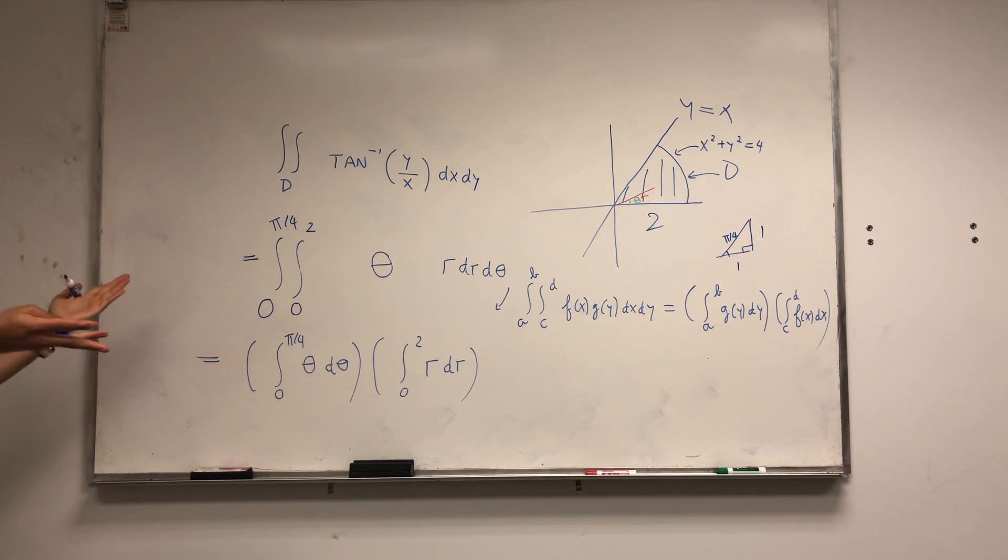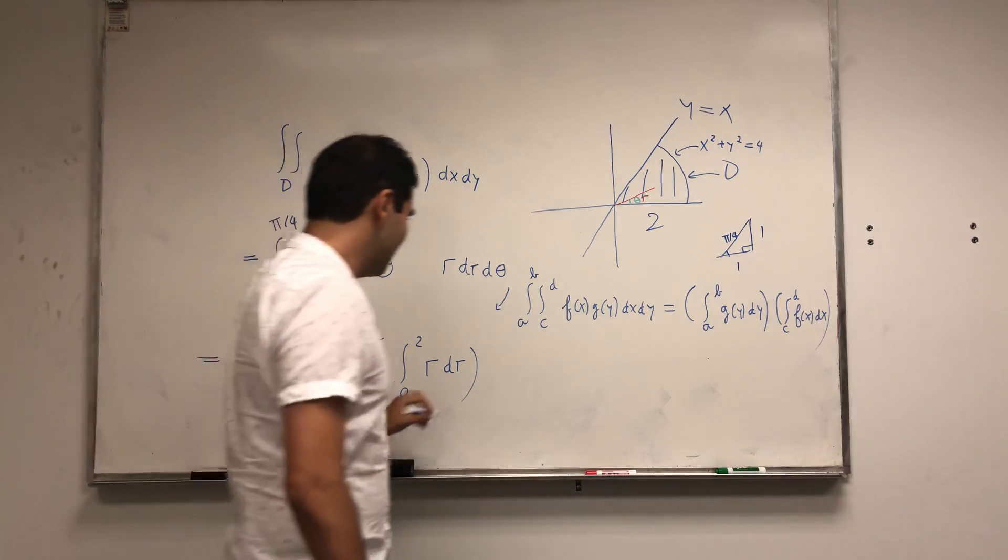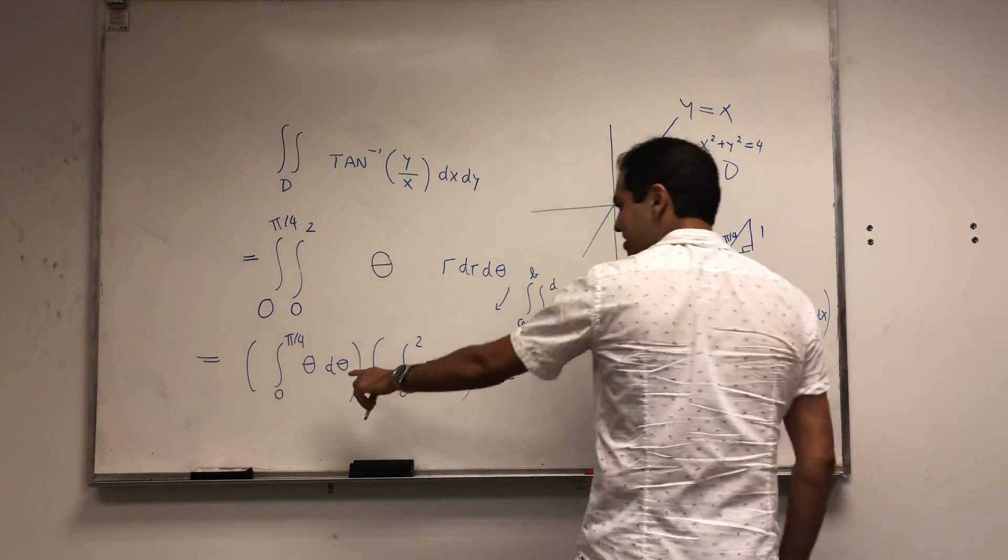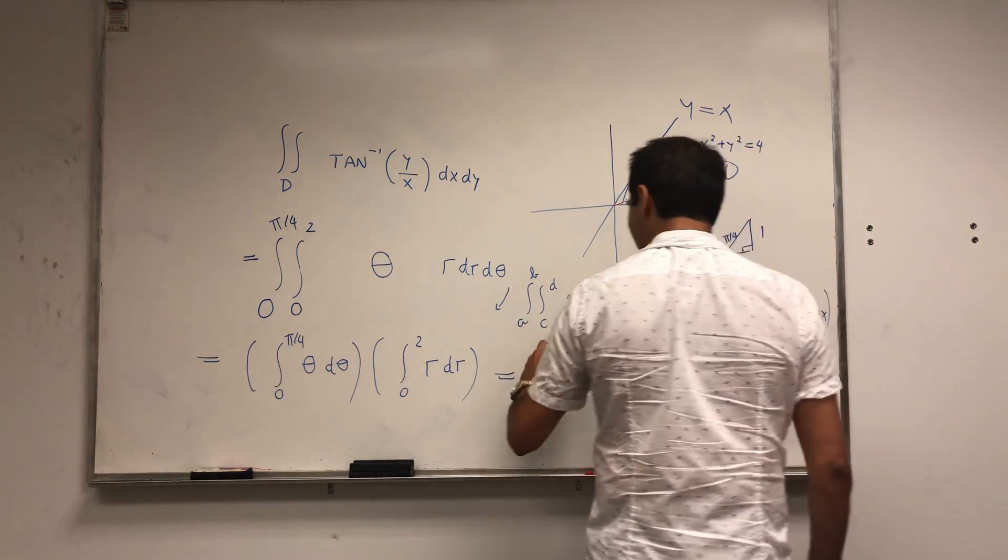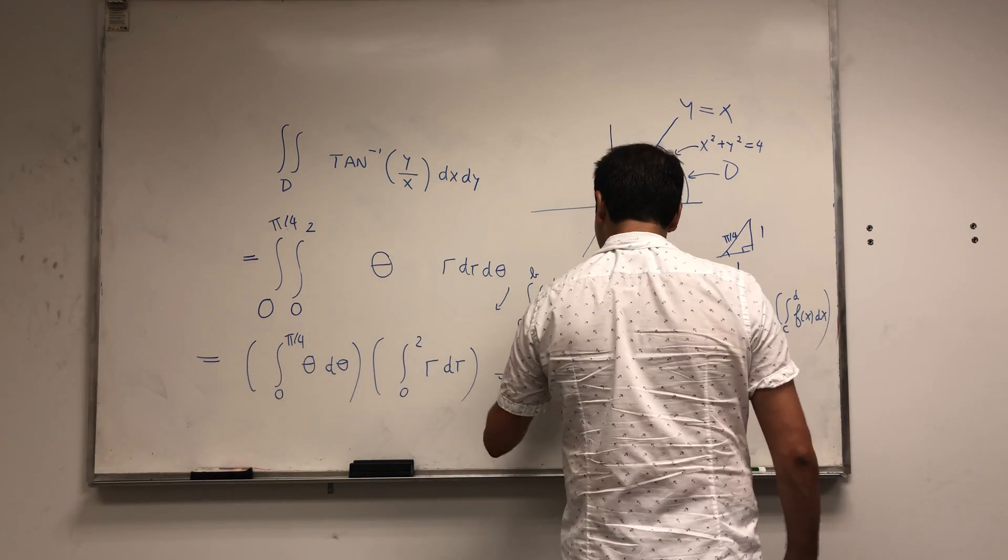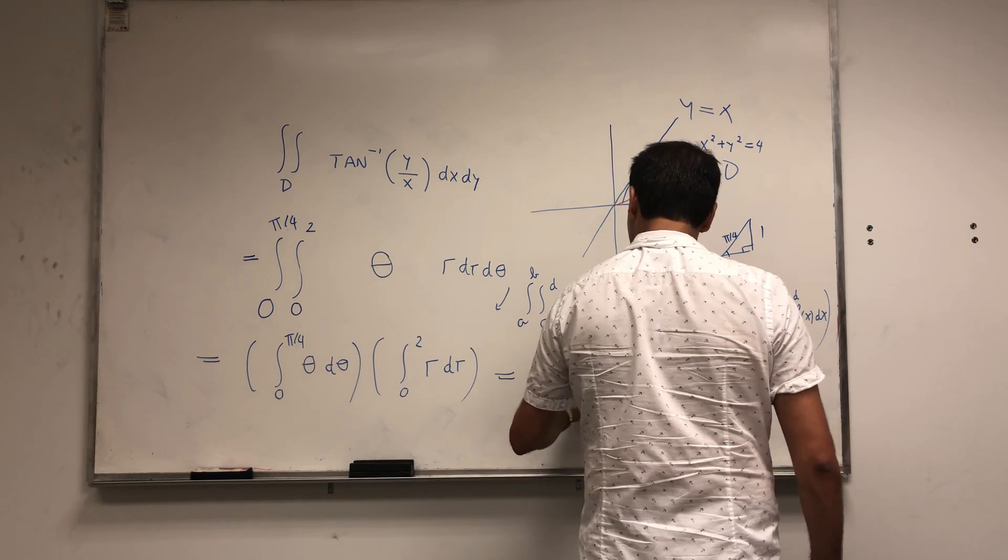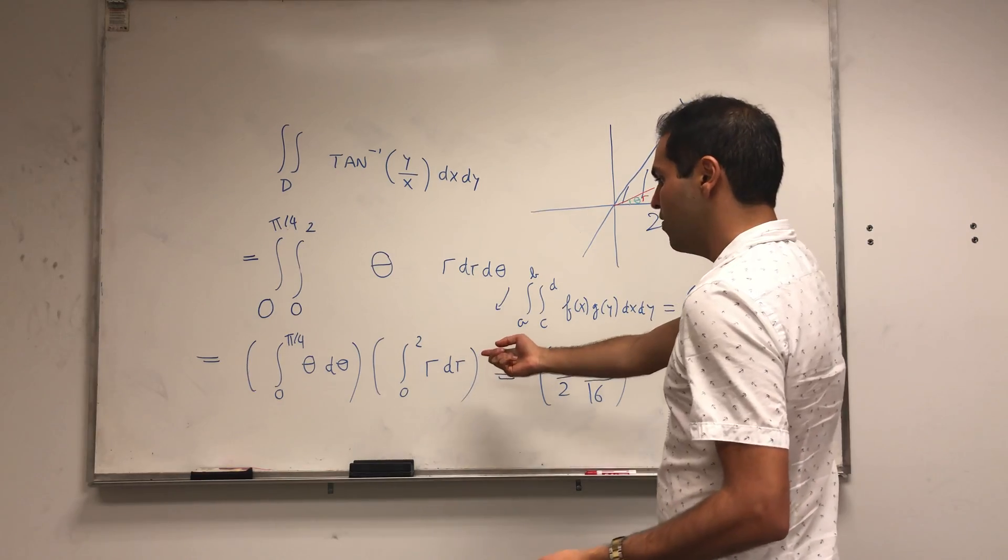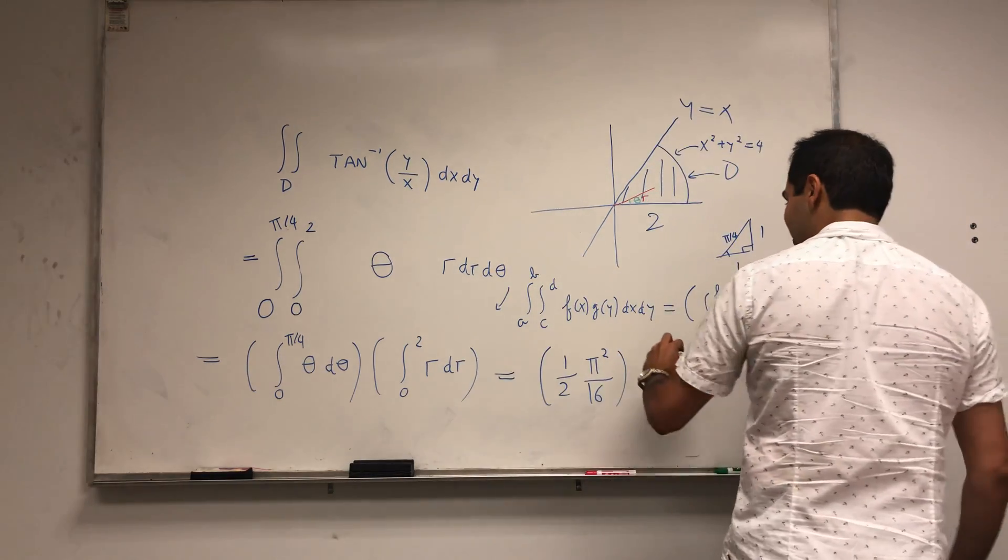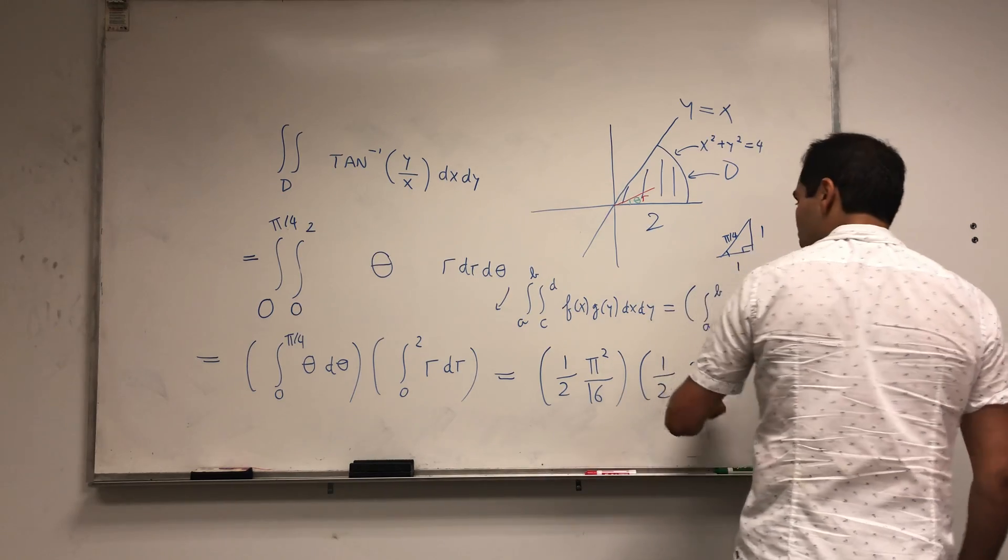And so we turn this complicated integral, super complicated integral, into two easier integrals. Now we can just evaluate this. An antiderivative of theta is one half theta squared, so we get one half pi squared over 16. And an antiderivative of r is one half r squared, so it becomes one half times 2 squared.